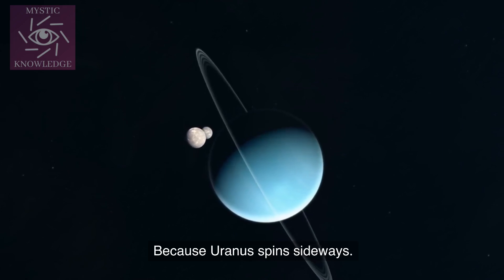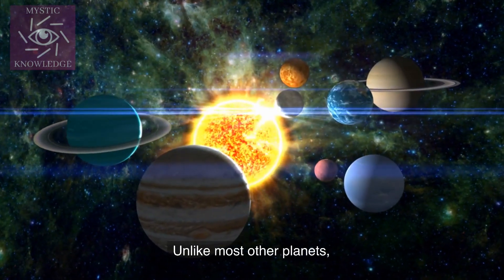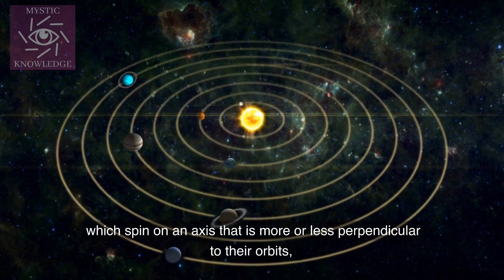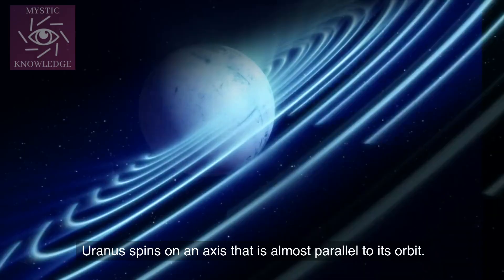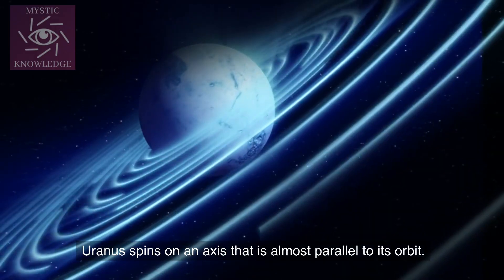Because Uranus spins sideways. Unlike most other planets, which spin on an axis that is more or less perpendicular to their orbits, Uranus spins on an axis that is almost parallel to its orbit.